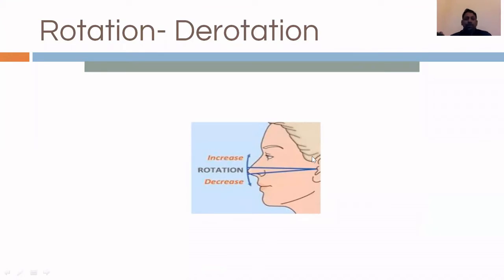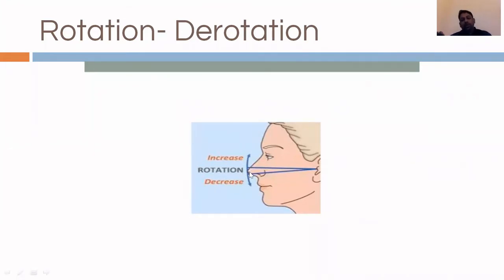The tip is rotated along an arc whose center point is the external auditory canal. The tip can be rotated either upwards or downwards. Rotating it upward is called rotation, and rotating it downward is called de-rotation.